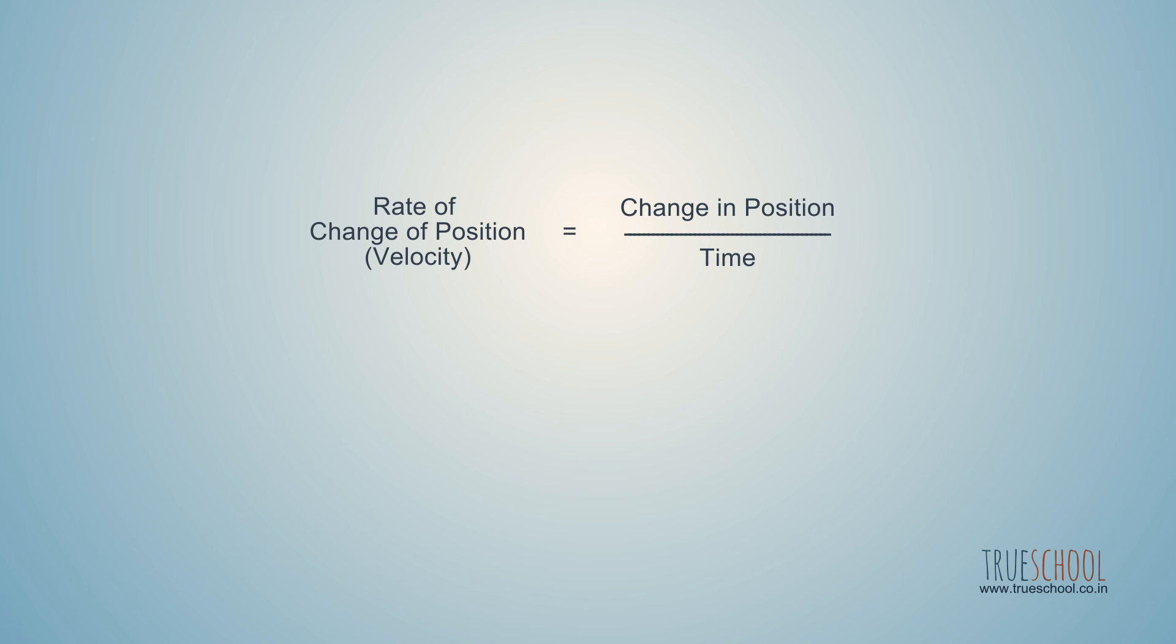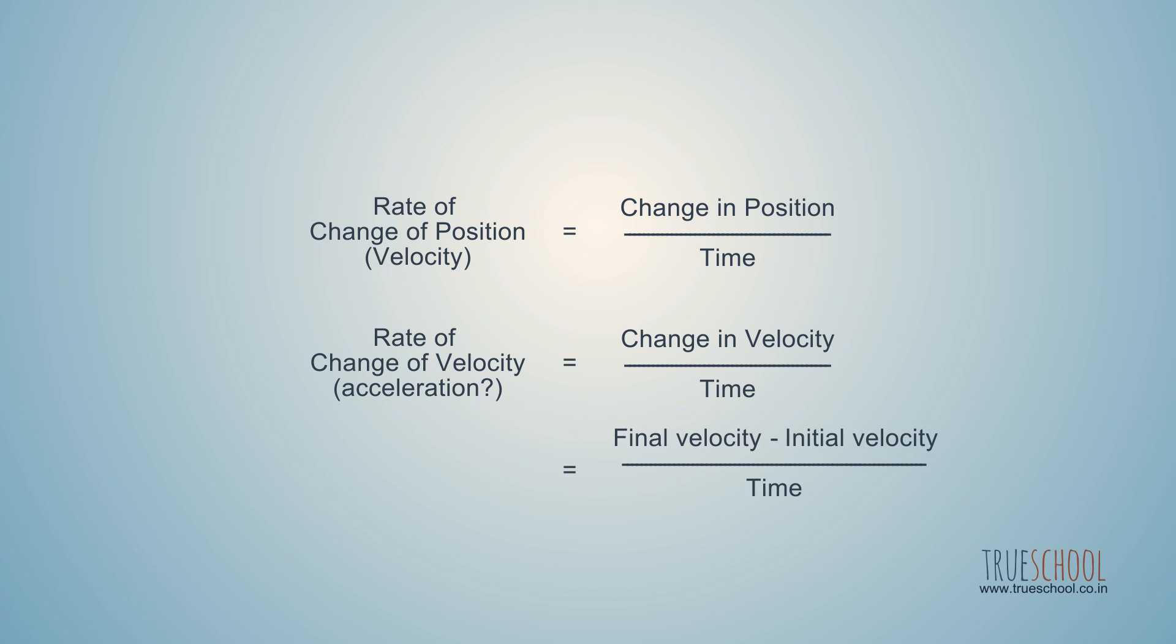So like we defined the rate of change of position, can we define the rate of change of velocity? Yes, we can. But for that we have to know the velocity of the body at the initial and final instance. But what we have found here is average velocity. Next, we will talk about instantaneous velocity.